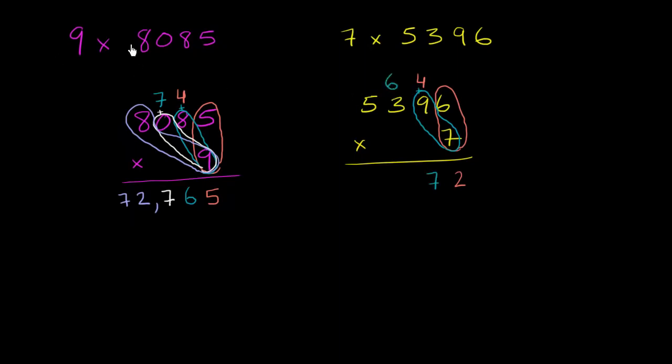Then we have to worry about 7 times 3, plus this 6 that we just finished carrying. 7 times 3 is 21, plus 6 is 27. We'll write the 7 here in the hundreds place and carry the 2.